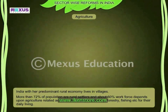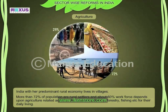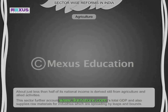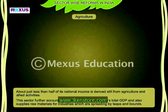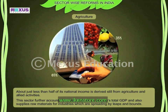India, with a predominantly rural economy, lives in villages. More than 72 percent of the population are rural settlers, and about 60 percent of the workforce depends upon agriculture-related activities like animal husbandry, forestry, fishing, etc. About just less than half of its national income is still derived from agriculture and allied activities. This sector further counts for nearly 35 percent of the country's total GDP and also supplies raw materials for industries which are spreading by leaps and bounds.